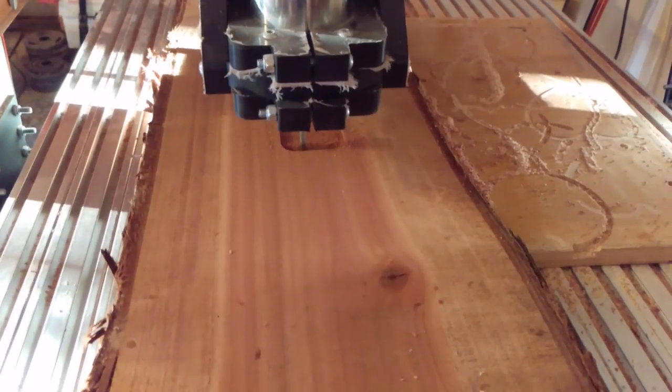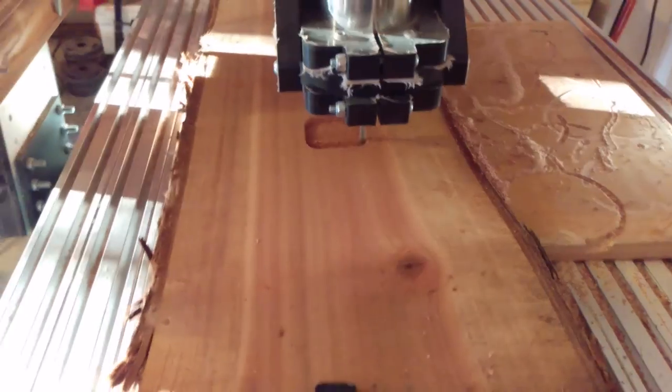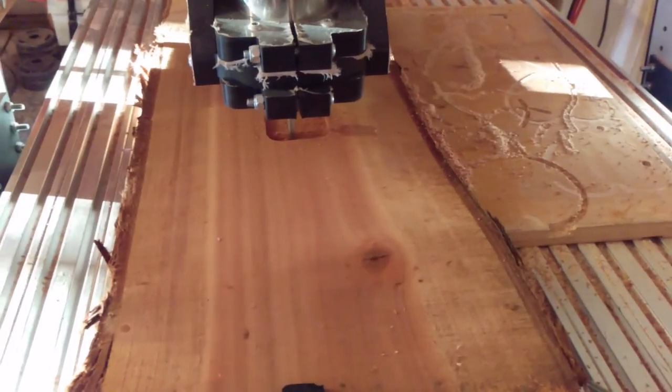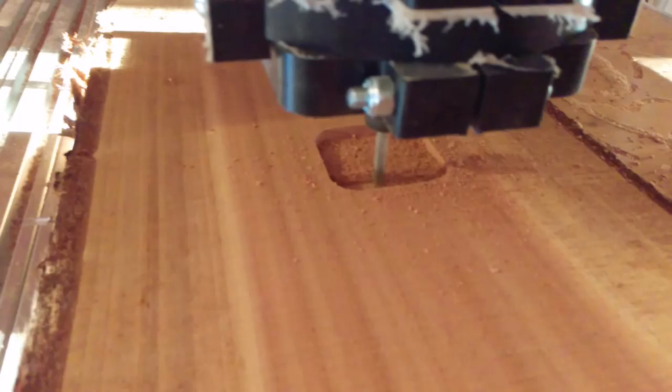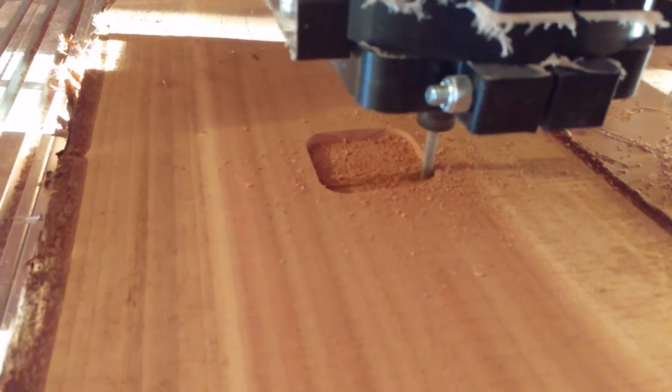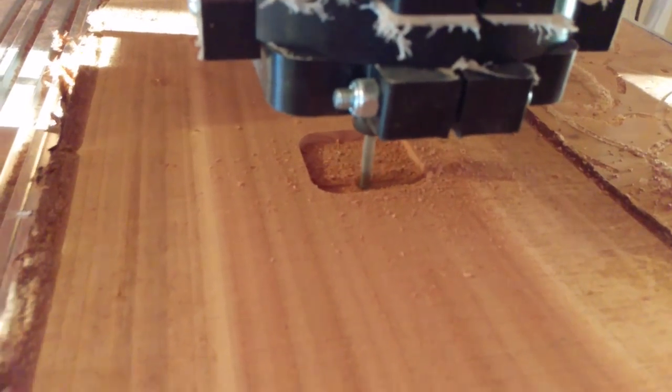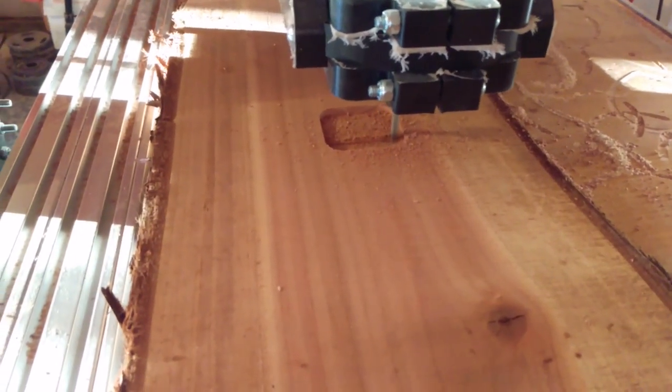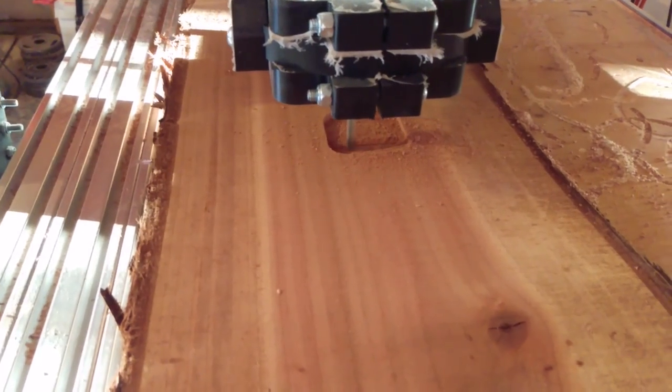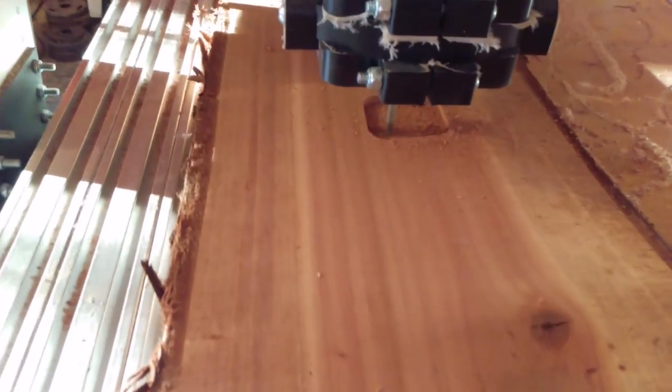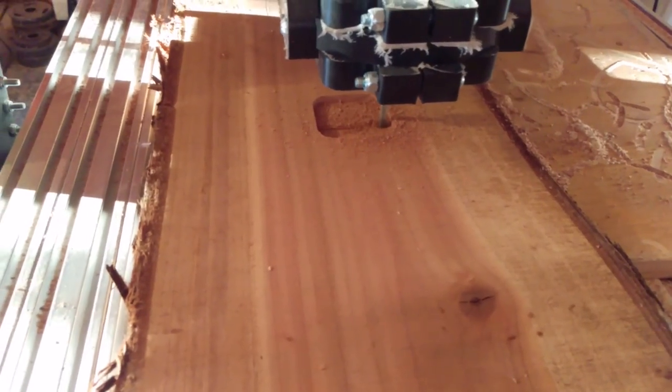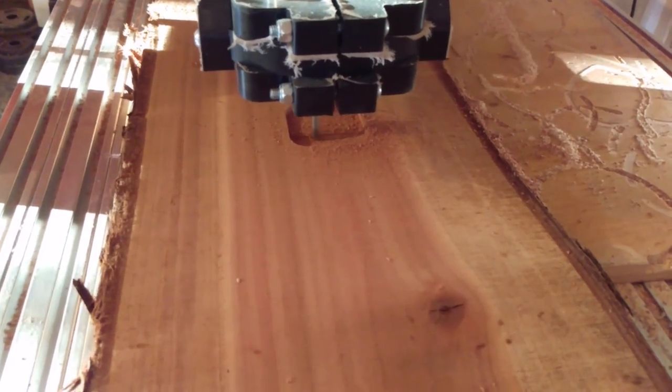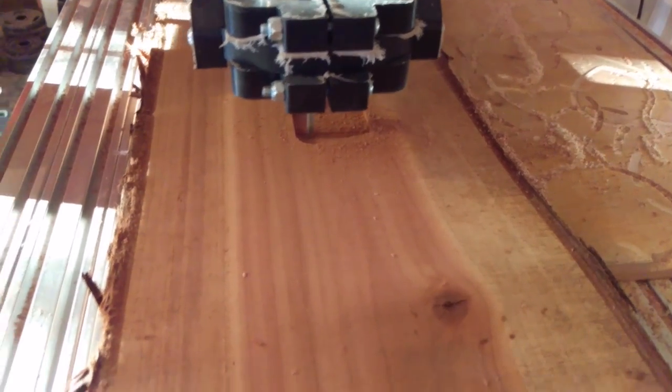All right, today I'm making a California clock. It's going to be a profile cut clock, the shape of the state of California, basically 18 inches in length by about 8 inches in width. Right now it's cutting out the pocket pass for the movement. The clock movement is going to come out on the back, then I gotta just poke a little hole through there and then I'll flip it over and run the V-carve for the 3, 6, 9, and 12 times and then the actual profile cut of the state of California.